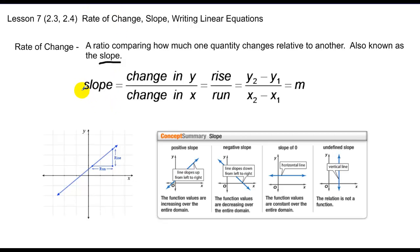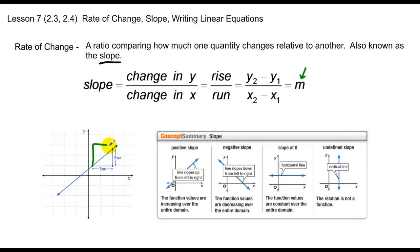Slope can be calculated in a number of different ways: change in y over the change in x, the rise over the run, which many of us know. The difference of y over the difference of the x's, or y2 minus y1 over x2 minus x1, and the common abbreviation for it is m. When we want to find the slope from point to point on a line, we take the rise — how much it goes up from one point to the next — over the run, how much it goes over from one point to the next.